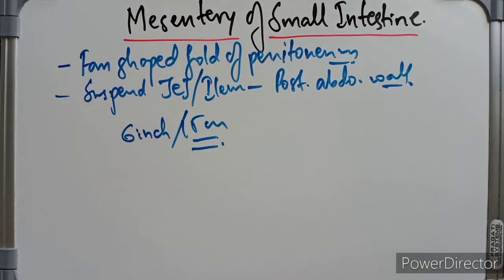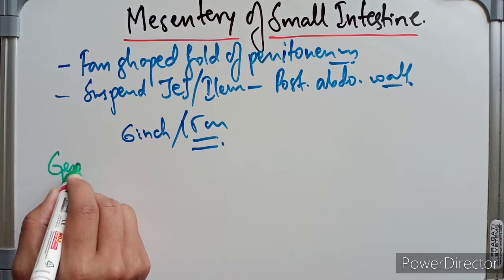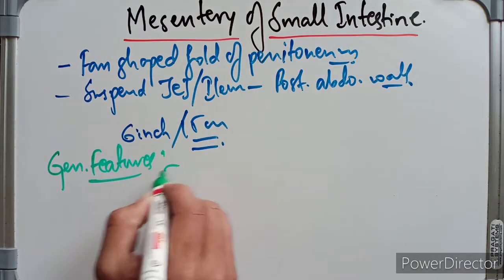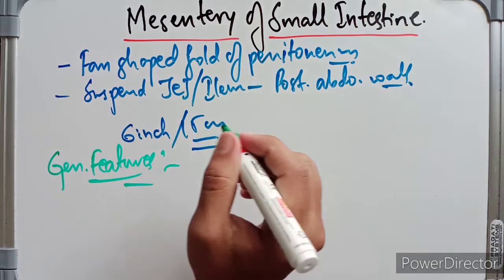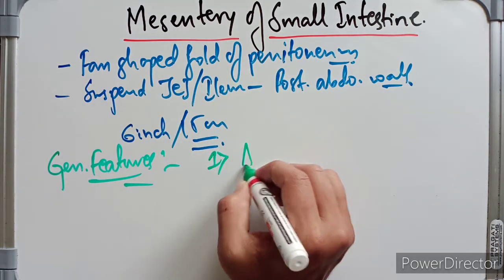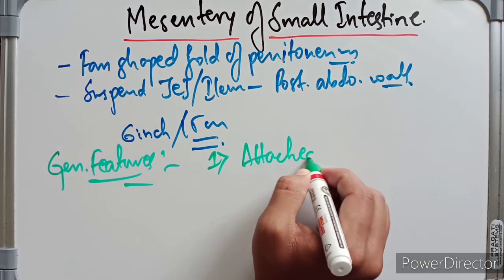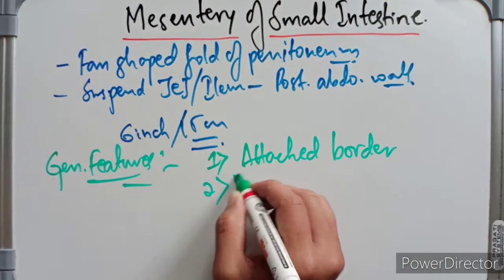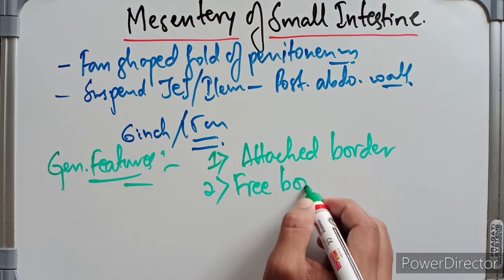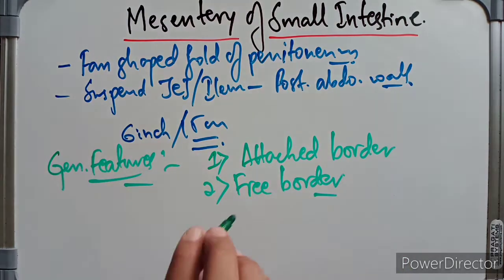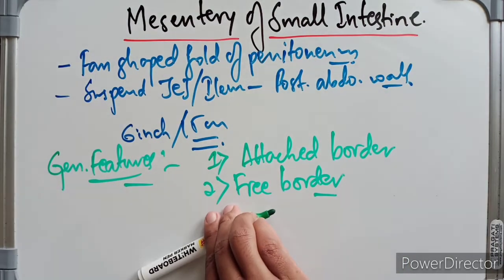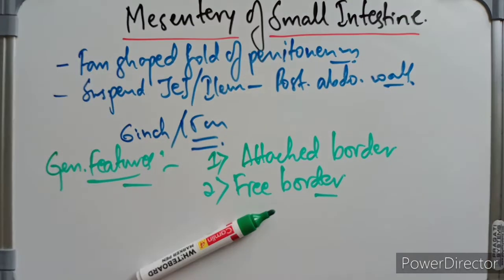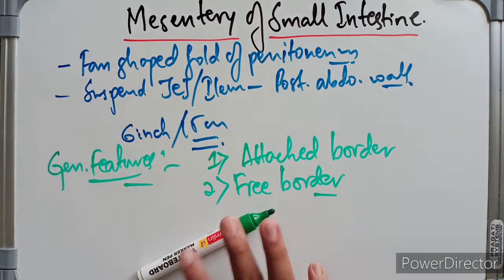The general features of the mesentery: the mesentery has two borders — one is the attached border, which attaches to the posterior abdominal wall, and the second is the free border, which arises from the attached border.